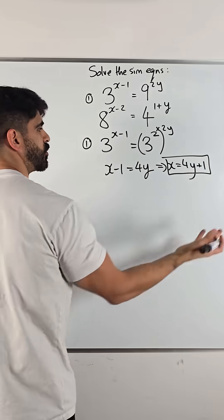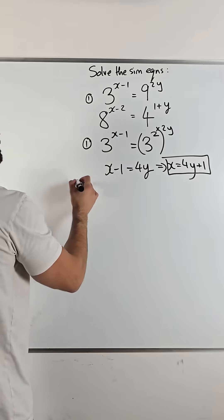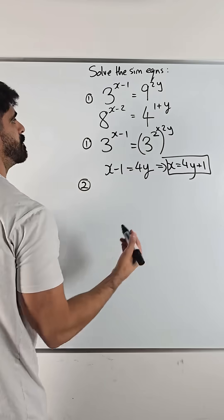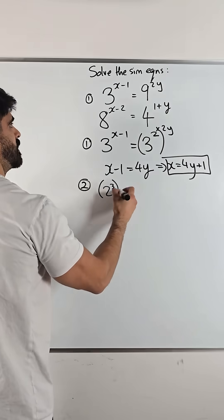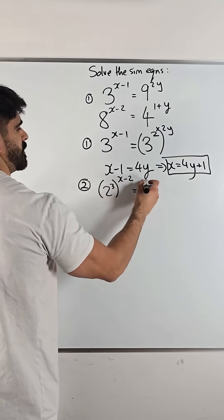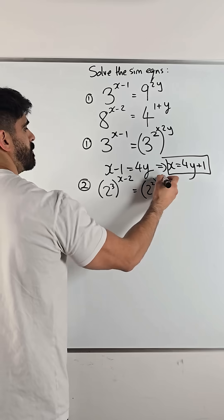And once you realize what you need to do here, the question is actually quite simple. 8 and 4, they're both powers of 2. So, 8 is 2 cubed to the x minus 2 and 4 is 2 squared to the 1 plus y.